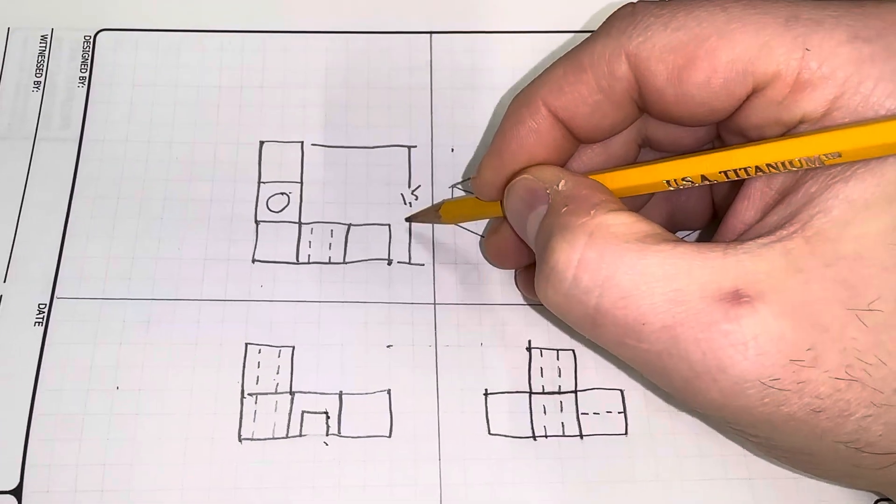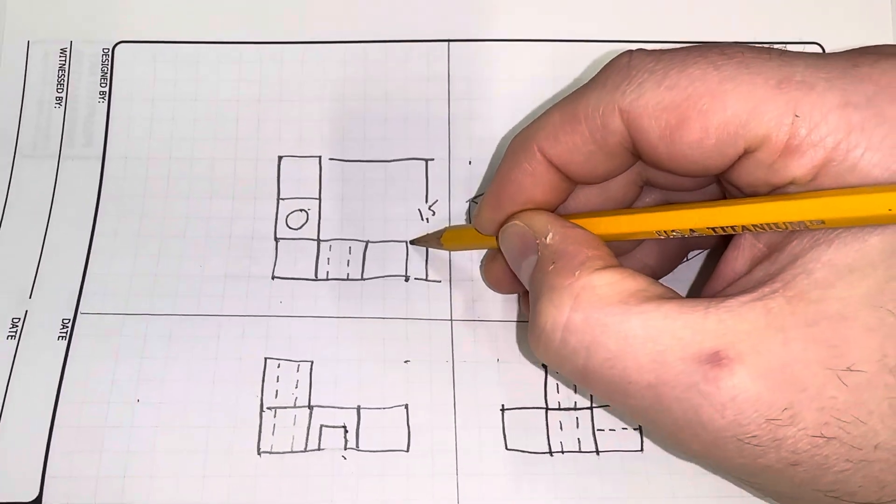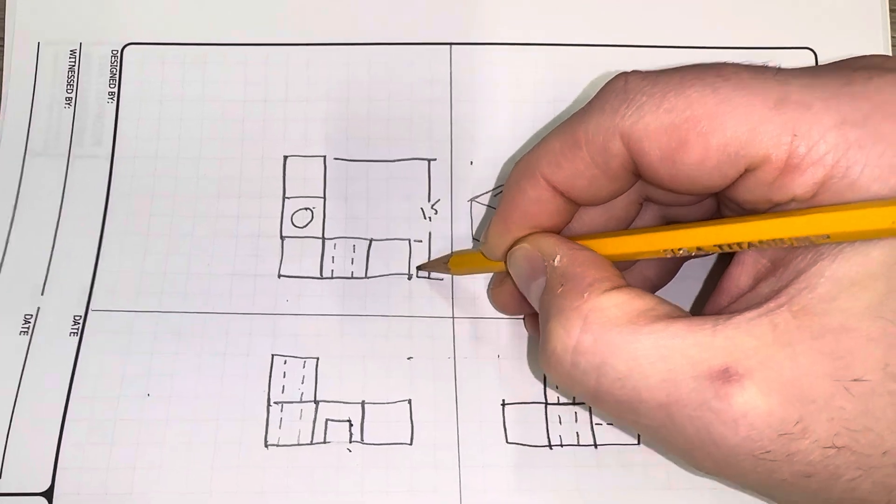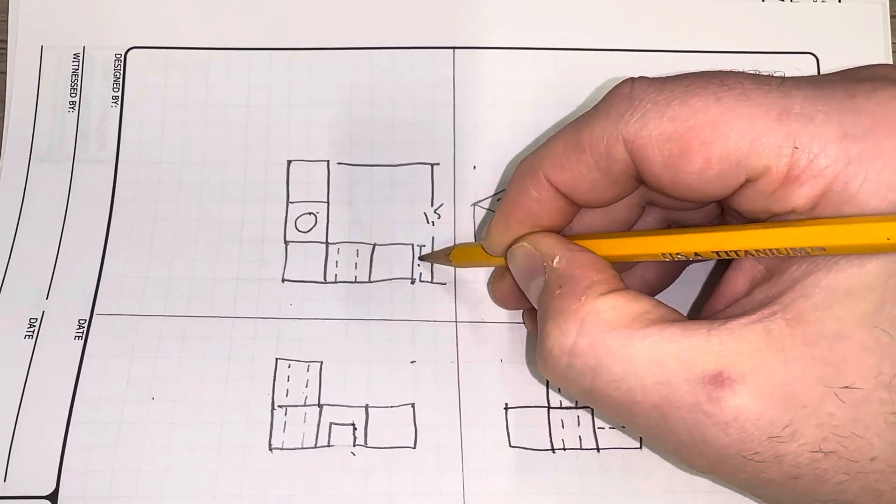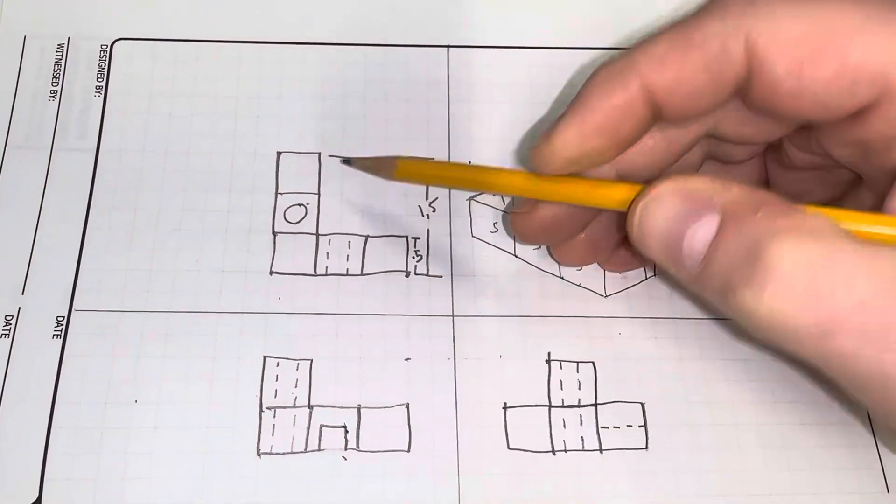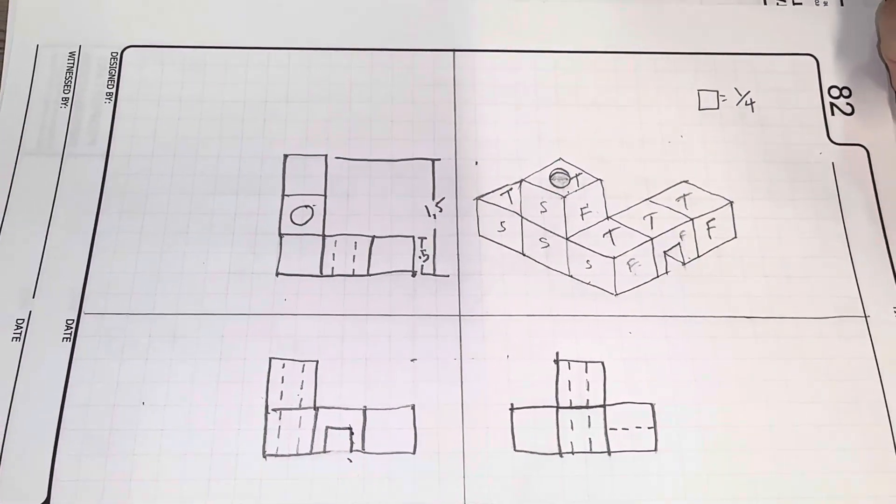Now, we have a feature right here that we should dimension as well. So we're going to come here, where it starts, and where it ends. This would be 0.5. I don't need to measure this, because that, by default, I know is an inch.